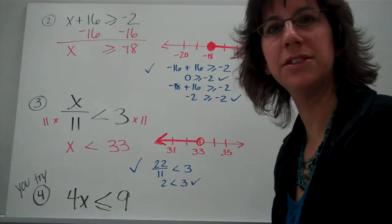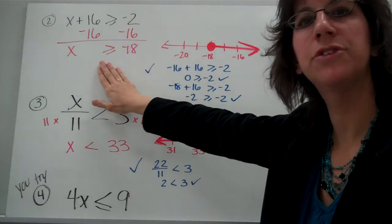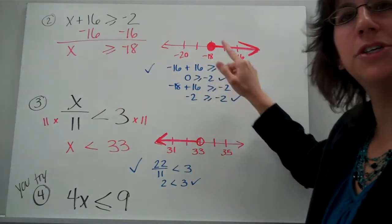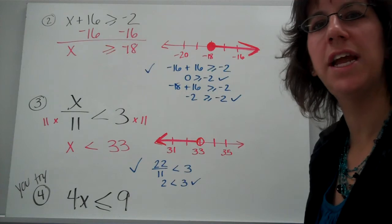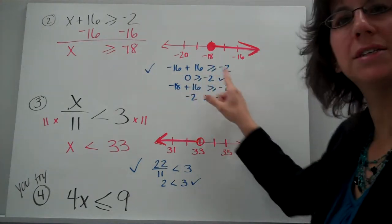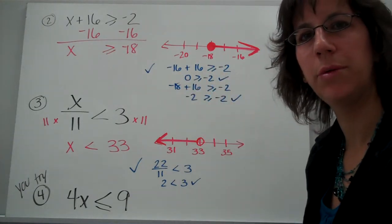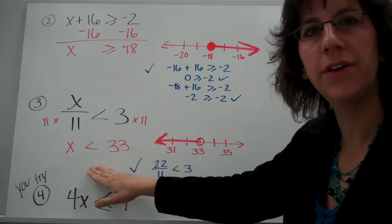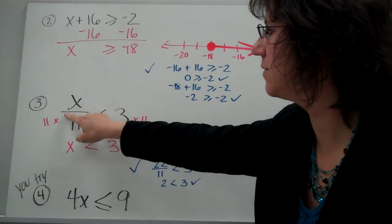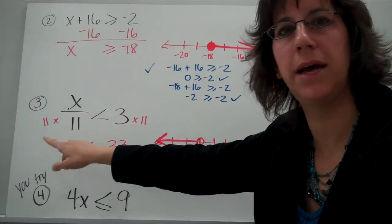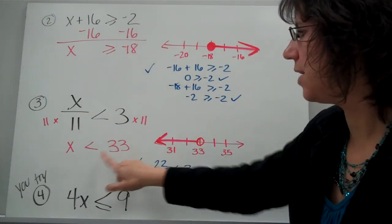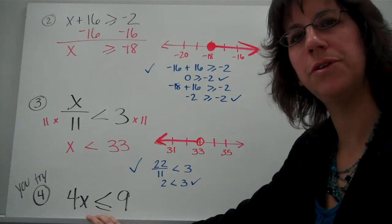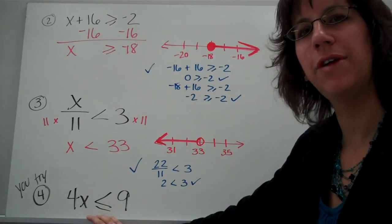Here's your answer — remember you're doing the inverse of adding. Make sure you have a closed circle shading in the right direction. You can check some of those answers to verify they work. For the next example, same as solving equations: you do the inverse. The inverse of dividing by 11 is multiplying by 11. Then graph. Go ahead and try that one on your own and come back.